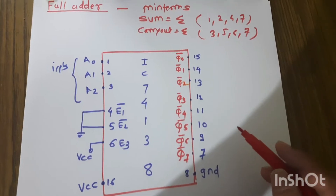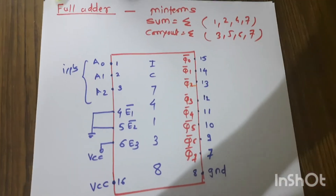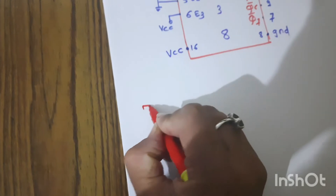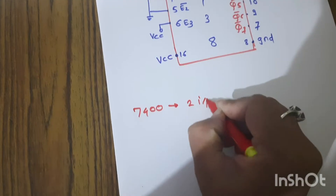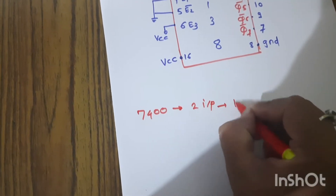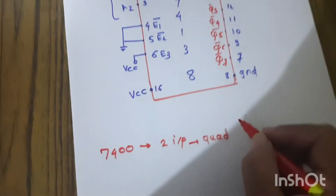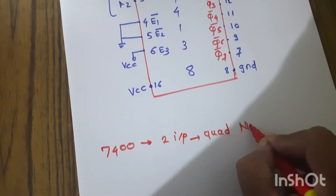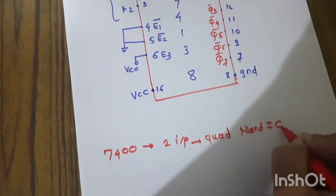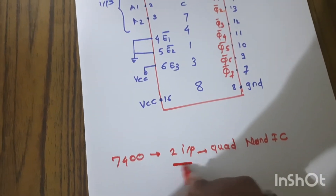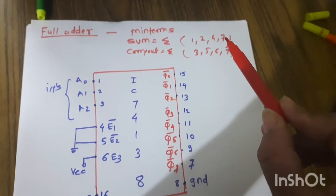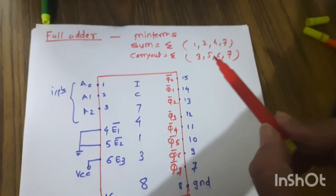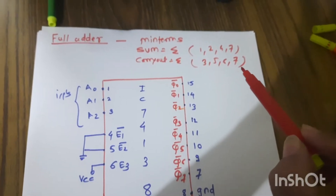That's why we use IC 7400, which is the two-input quad NAND gate IC. It is a two-input IC, meaning each NAND gate takes two inputs. We need four NAND gates total — two for the sum and two for the carry out.